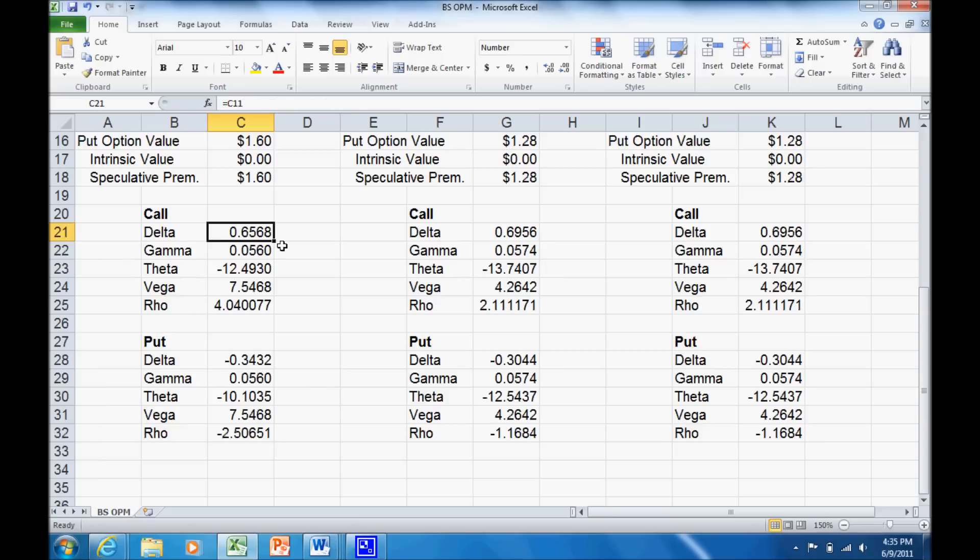The first two Greeks look at how sensitive the option price is to the underlying stock price. Delta specifically measures how sensitive the option is to the underlying stock price. Here what this is saying is if the stock price goes up by $1, the value of the option will go up by about $0.66. Gamma measures how delta changes. Delta is going to change as the stock price changes. So this is like a second derivative of measuring how sensitive delta is to the underlying stock price.